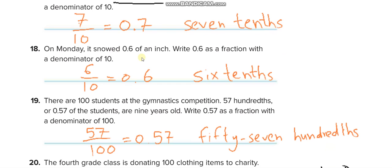On Monday it snowed 0.6 of an inch. Write 0.6 as a fraction with a denominator of 10, so 6 over 10, 0.6, 6 tenths. 0.57 is 57 over 100. This is a point, let me darken it for you. 0.57 and 57 over 100.